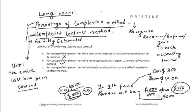Option C states that the percentage of completion method involves less subjectivity compared to the completed contract method — this is also incorrect, because recognizing five hundred dollars of revenue in the first year involves a lot of judgment and hence a lot of subjectivity. So option B is correct. Let us now move to the third question.